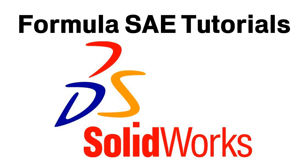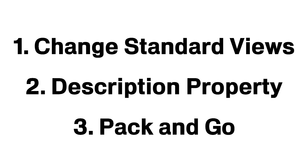Welcome to another video in the SOLIDWORKS Formula SAE tutorial series. In this video, I'll be going over several tips and tricks that didn't quite fit in with other videos but I still think are useful for Formula SAE. The first tip will be how to change standard views and rotate them, second we'll be using the description property in both your parts and your drawings, and last I'll be talking about how to use the pack and go feature.